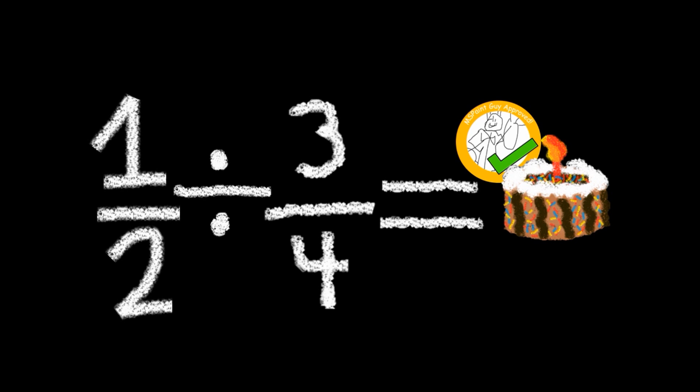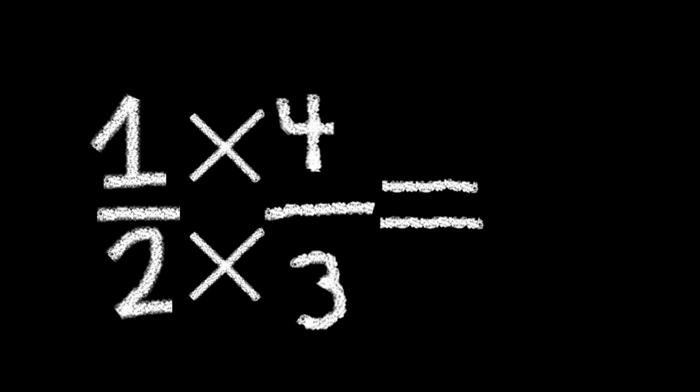Basically, all you have to do is flip the second fraction in the division problem. And by that, I mean you turn the numerator into what the denominator used to be, and turn the denominator into what the numerator used to be. And then you multiply, just like you multiplied fractions. Numerator with the numerator, and denominator with the denominator. That's it. Simple as that.